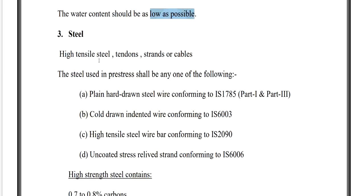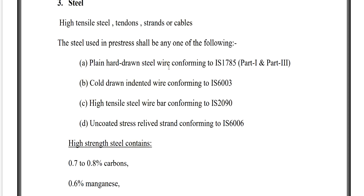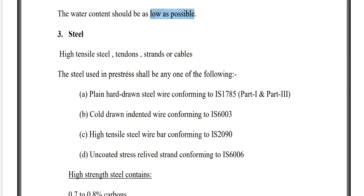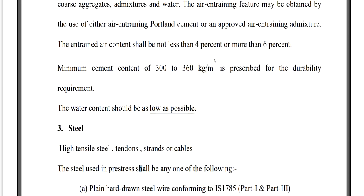For steel, high tensile steel tendons, strands, or cables are used. The steel used in prestressed concrete shall be any one of the following: plain hard drawn steel wire confirming to IS 1785, cold drawn indented wire confirming to IS 6003, high tensile steel wire bar confirming to IS 2090, or uncoated stress-relieved strand confirming to IS 6006. This is an important point often asked in competitive exams.